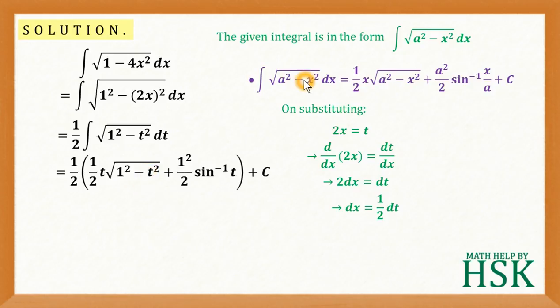Now, I am going to apply this formula. Here, on applying the formula, I have treated t in terms of x, in place of x and apply this formula. So, I am going to get this 1 upon 2t square root of 1 square minus t square plus 1 square upon 2 sin inverse of t upon 1, that will be t plus c.